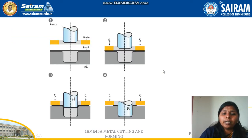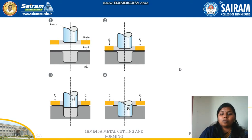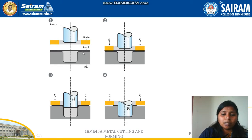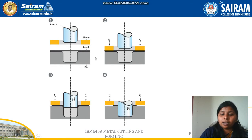In the deep drawing process, either a flat piece is converted into a hollow one, or a hollow one is converted into a hollow with a smaller cross section. The sheet metal is placed below the die of the required shape, and a punch attached with the binder is placed above it. When force acts on the punch, it moves towards the sheet metal and deforms it to the required shape of the die.